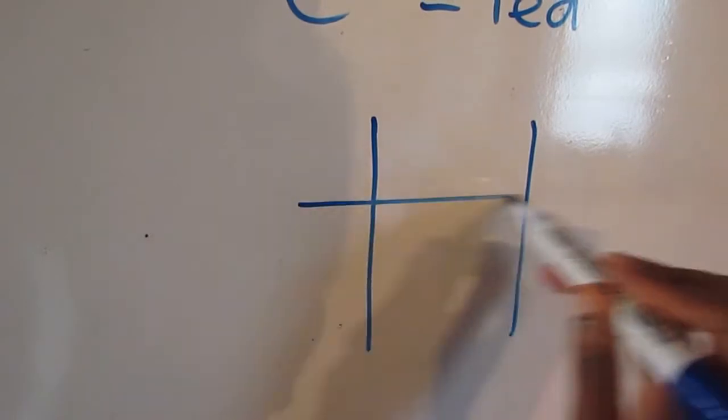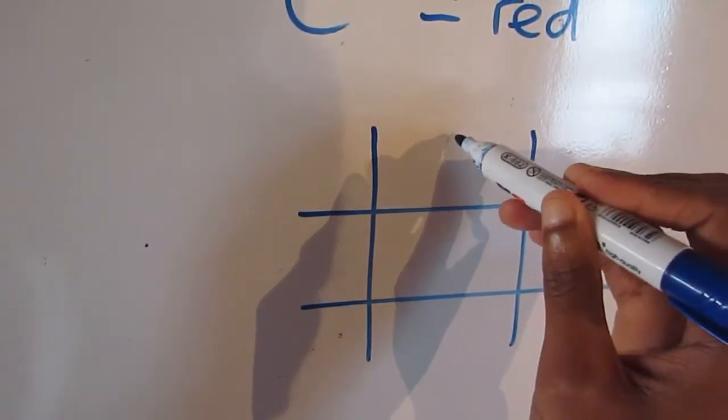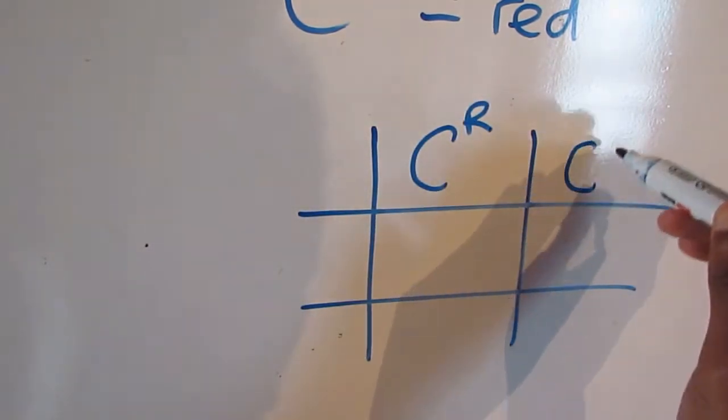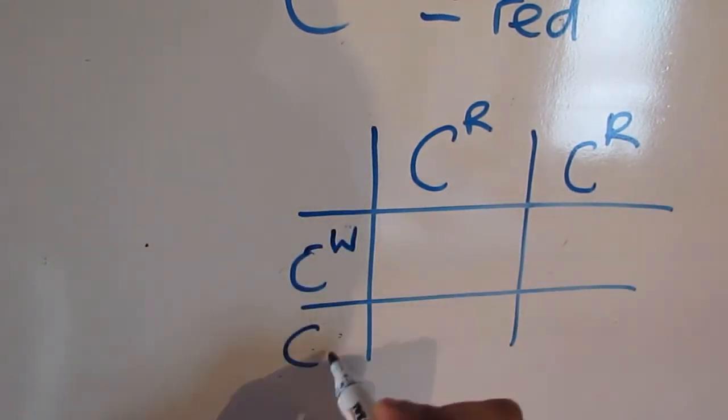So constructing our Punnett square, using our monohybrid inheritance, because we are looking at one characteristic here, we're going to use our red, so homozygous for red and homozygous for white.